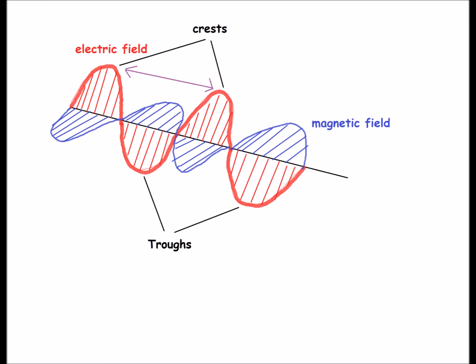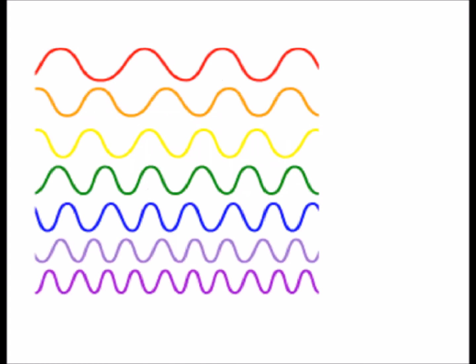Each color has a different wavelength. A wavelength is the length between two crests. Red light has the longest wavelength, while blue light has the shortest wavelength.